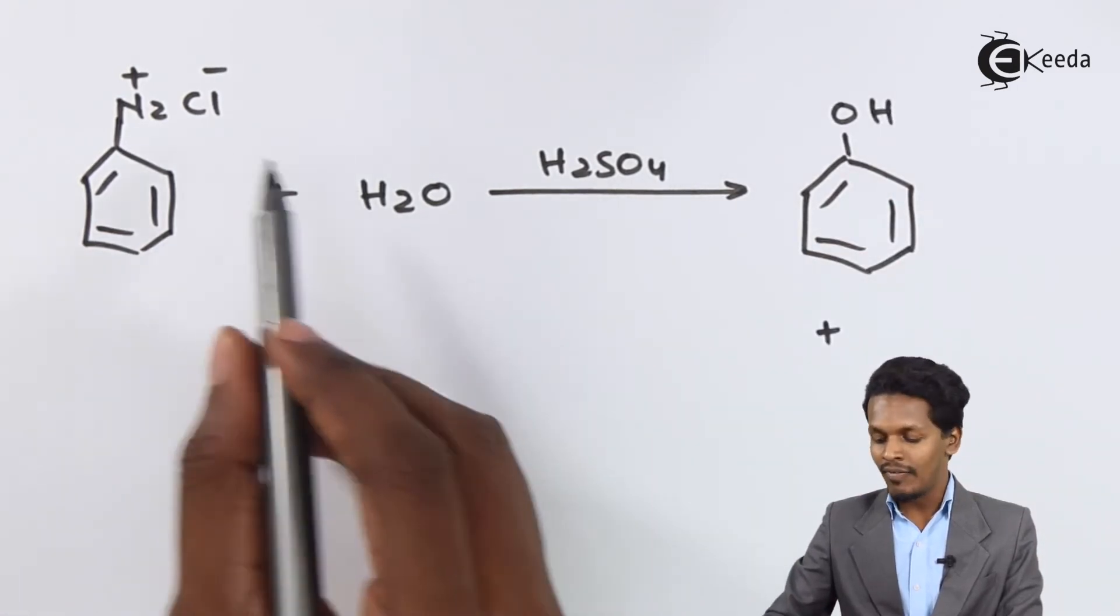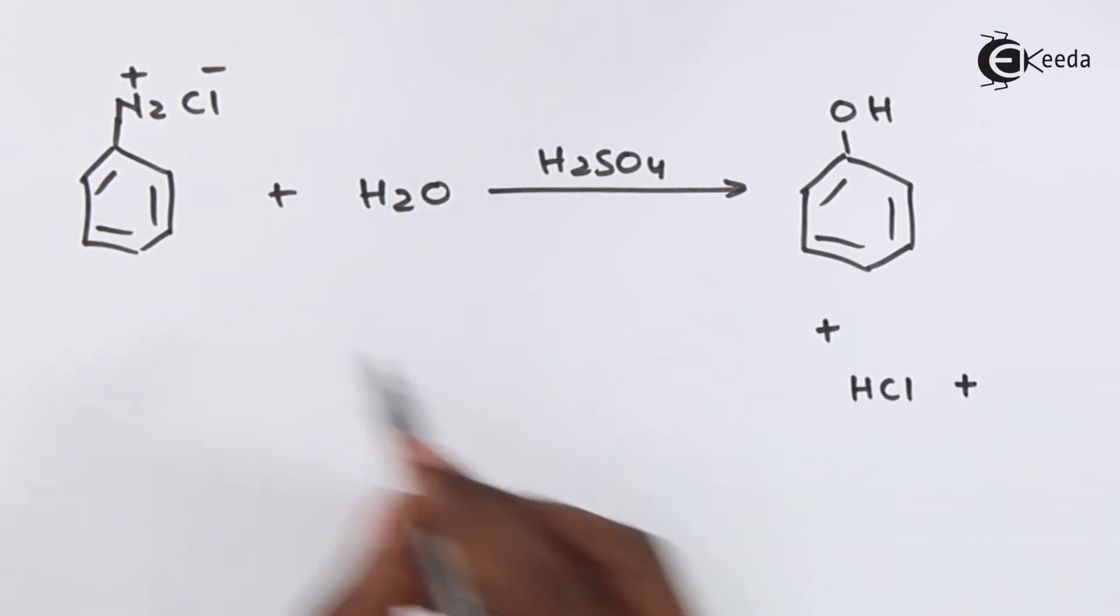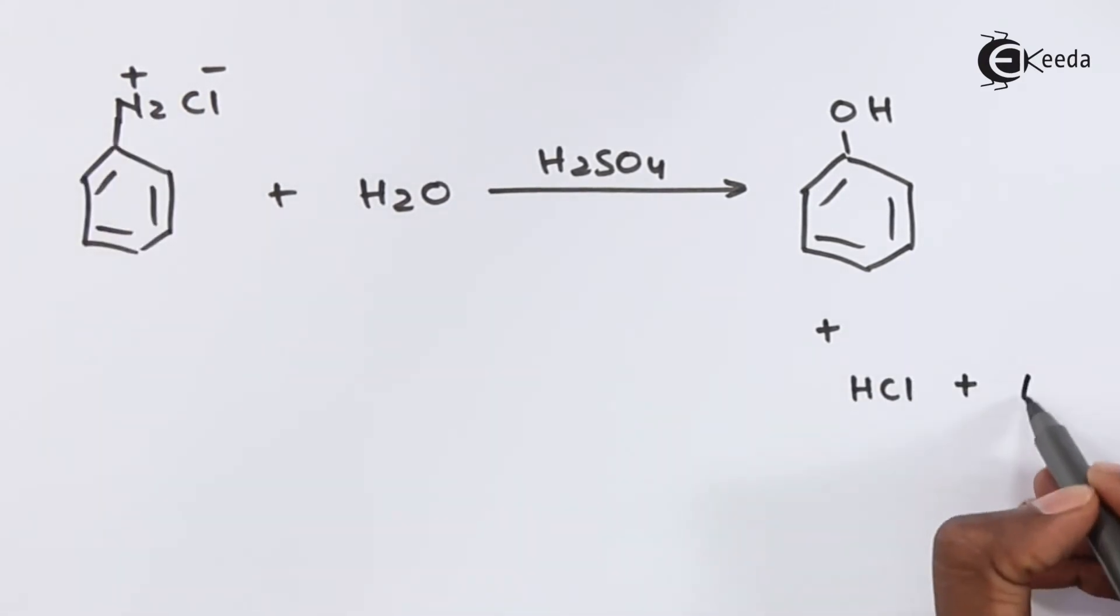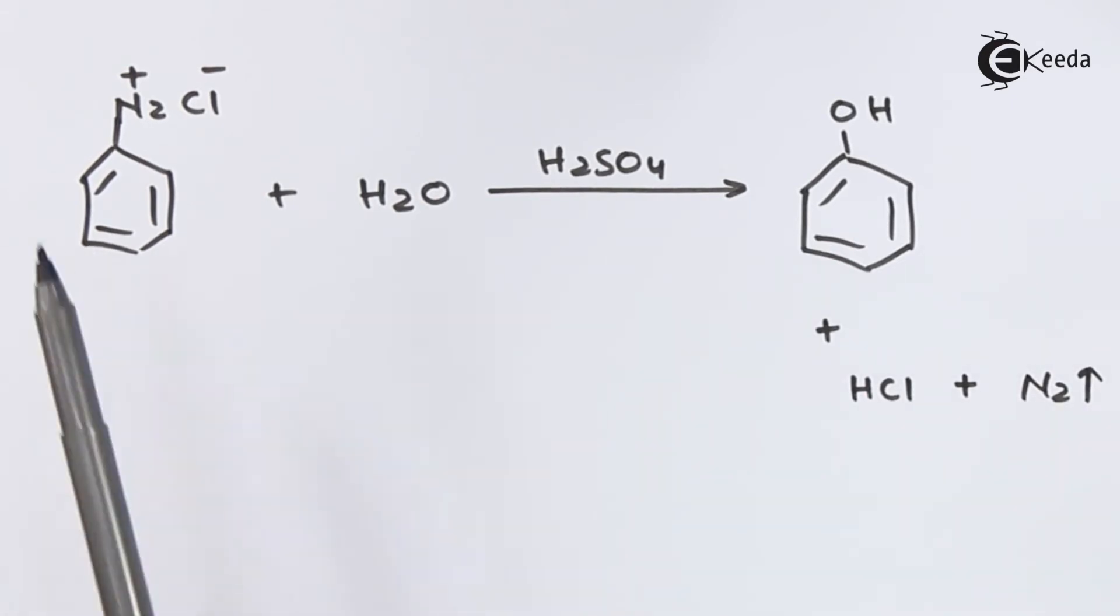One of the hydrogens will take away this Cl in the form of HCl which will be removed as a byproduct, while N2 will be evaporated. This is how we can convert benzene diazonium chloride into phenol. This was the reaction.